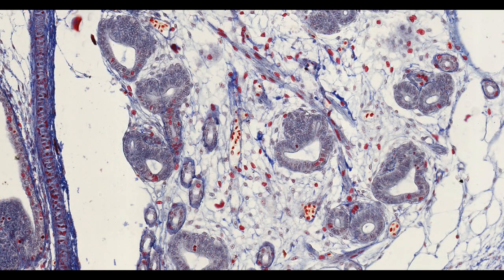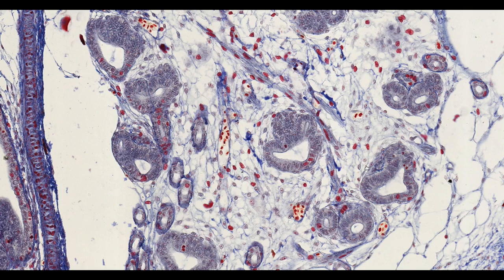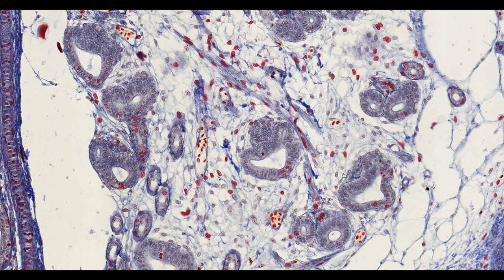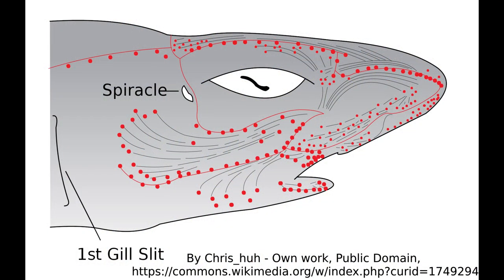We can even see some nerve fibers such as these cells here making their way through the connective tissue and connecting to the bulbs of the ampullae to take sensory information to the central nervous system. The bulbs and ducts of the ampullae of Lorenzini are filled with a thick gel-like substance.